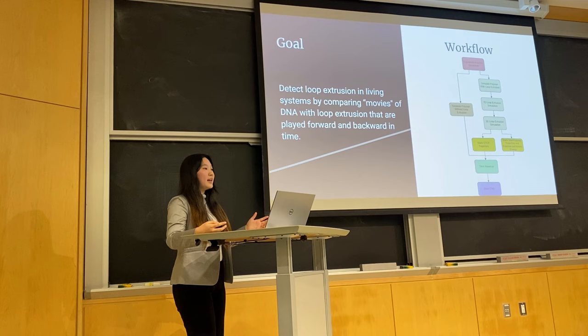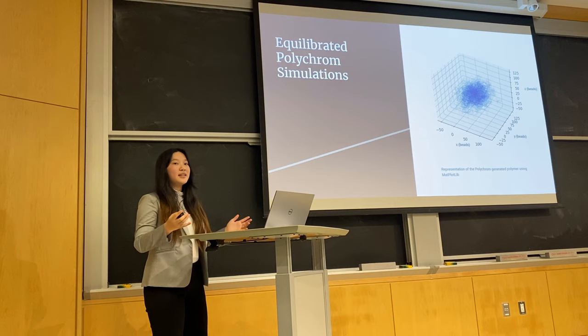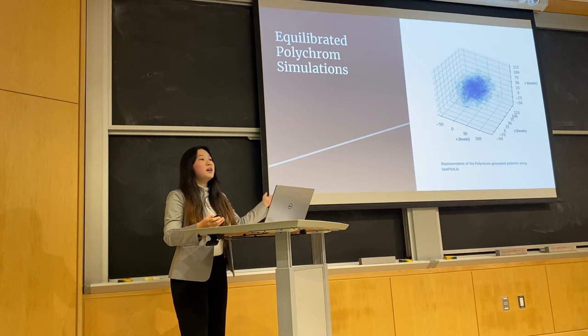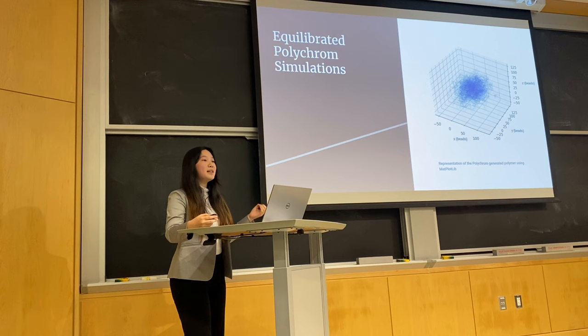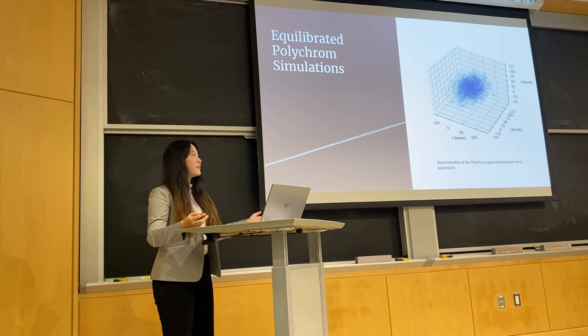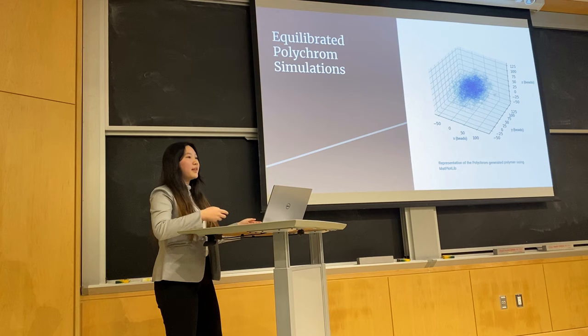To assess the feasibility of this approach, I've been generating large data sets using the polychrome library, which allows me to create synthetic representations of biological polymers. The first step is to create a series of polymers that do not have any loop extrusion acting upon them. This is done by first using a random walk to generate the general shape of a polymer with a predetermined size and length, using the bead-and-spring model with each bead representing approximately 750 nucleobases. Various forces are then applied — such as radius of contact, angle stiffness, and bond length — and the simulation is run to the point of equilibrium.